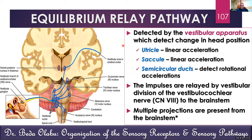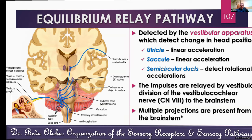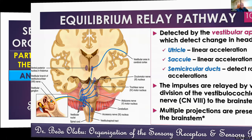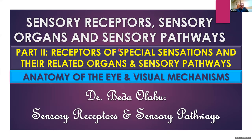That summarizes the anatomy of the ear and the mechanisms for hearing and equilibrium, completing the second part of the lecture. Our third part will cover anatomy of the eye and visual mechanisms.